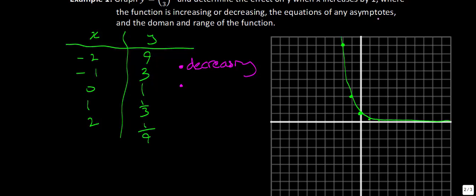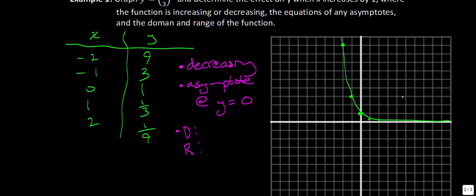Now for the second part of Example 1. Is the function increasing or decreasing? Quite obviously, this function is decreasing. The asymptote is a horizontal one at y equals 0. For the domain: the graph goes infinitely left and right, so x is a member of the reals. For the range: y has to be greater than 0. None of that should be surprising given the characteristics we discussed.